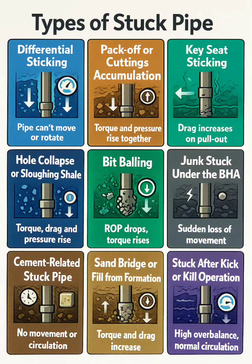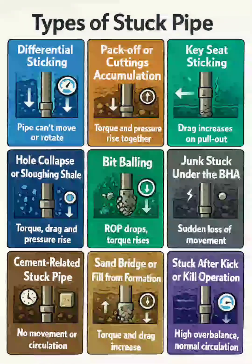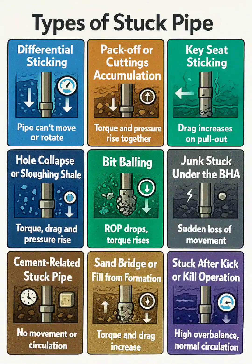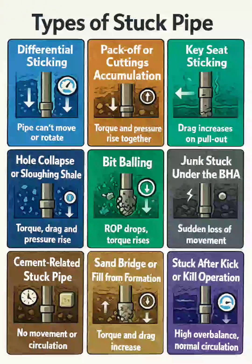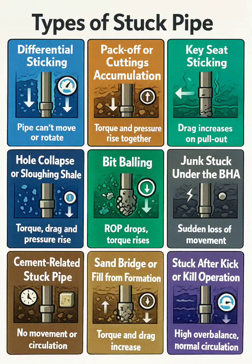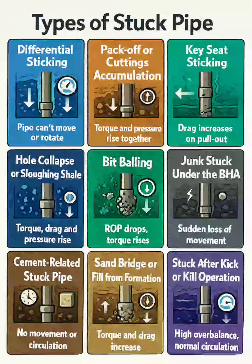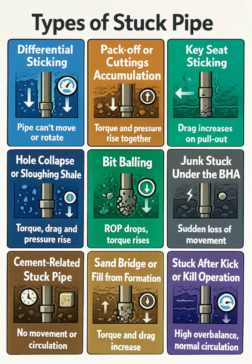Mechanical sticking — dogleg or ledging — occurs when the pipe is physically wedged or bent in tight curvatures or ledges. Indicators include high torque and drag with normal circulation. Happens in deviated or short-radius wells and may respond to jarring.